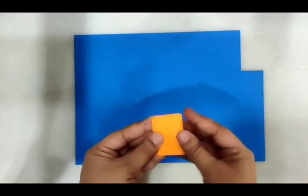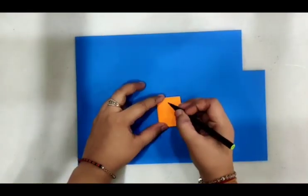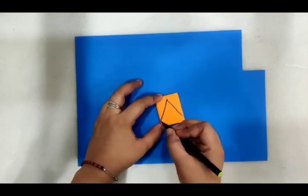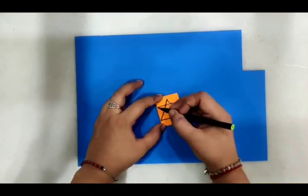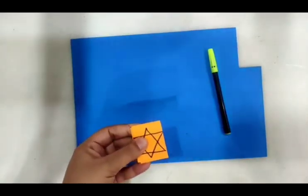Now fold the strip in the way it is shown in the video. Now with the help of a pencil or a sketch pen, make a star as we guide the children to make. Make a triangle and another triangle in the downward direction.